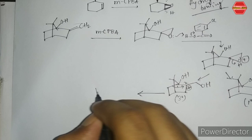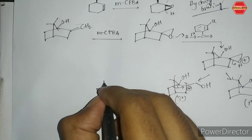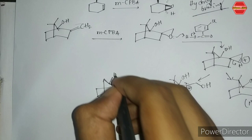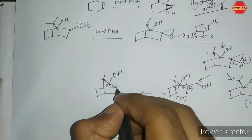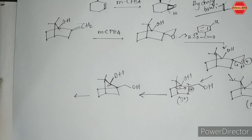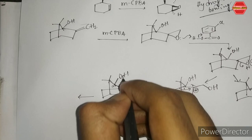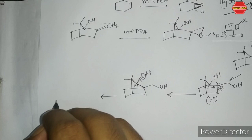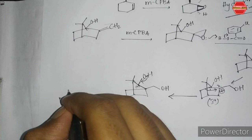After the 1,2-bond migration, we get a new intermediate. Here is the OH group, the positive charge, two methyl groups, and another OH. There are five bonds on this carbon, and the positive charge is stabilized because the oxygen has a lone pair of electrons. It stabilizes the carbocation, then loses a proton to form a double bond, giving us the final product.